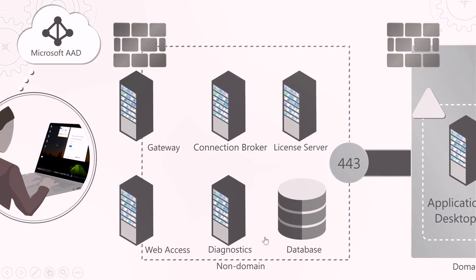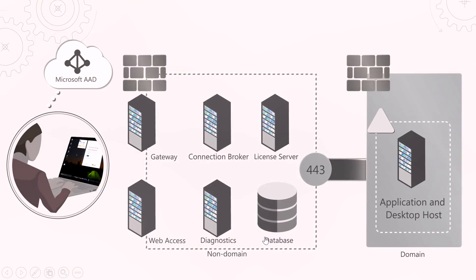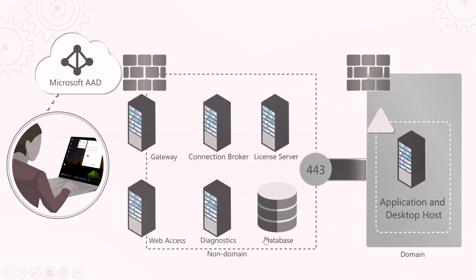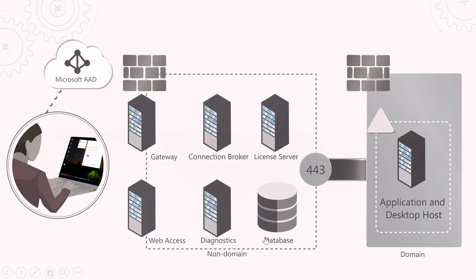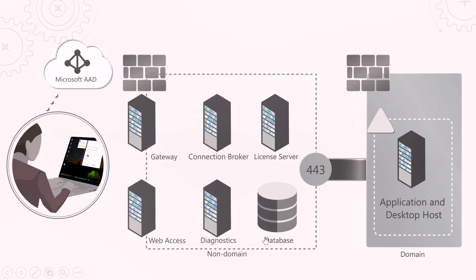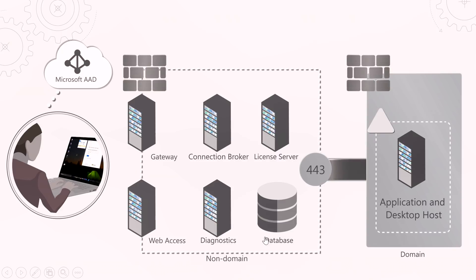What was actually happening behind the scenes during that authentication? Let's walk through that process. In this deployment, it is in steady state — I have deployed the infrastructure up into Azure, and my application and desktop hosts live in a separate network. We have also set up AAD to support that secure authentication. In steady state, all of my application and desktop hosts maintain an active connection into the deployment so we can ascertain the resource availability.